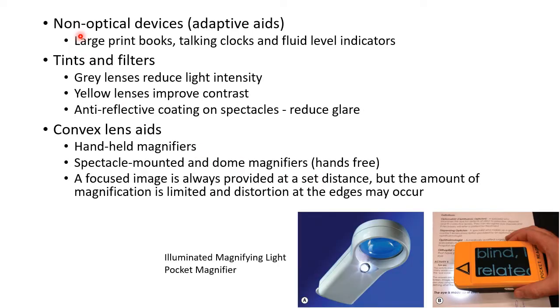The first type of low vision aids is non-optical devices, which are also called adaptive aids. These include large print books, talking clocks, and fluid level indicators.